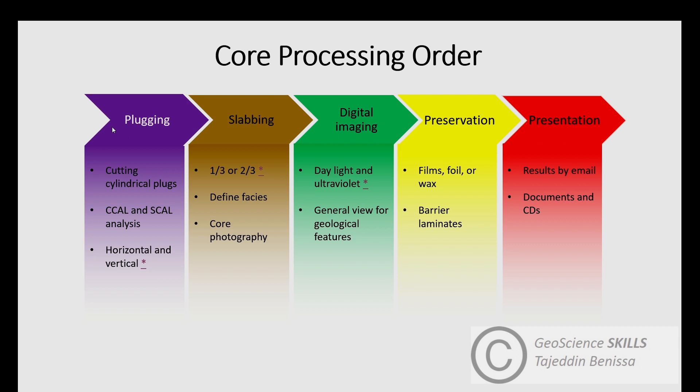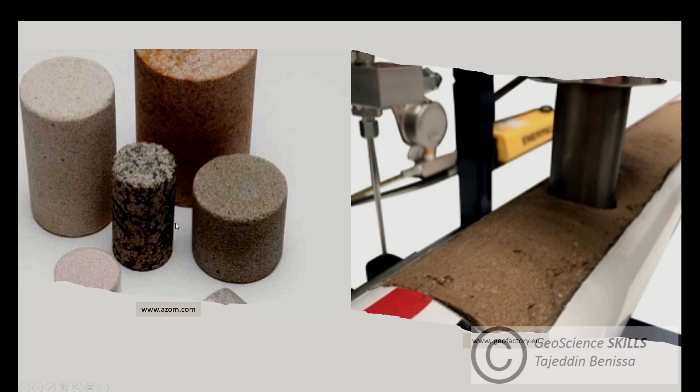Then we move to core plugging. Plugs are selected as per company directions. What are plugs? Plugs are cylindrical-shaped rock pieces extracted from the core by using a special type of bits, as we can see here. They are important to carry out conventional core analysis and special core analysis. The major plug orientation to be cut is generally horizontal and vertical, and sometimes oblique, based on company directions.